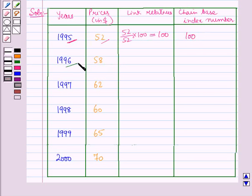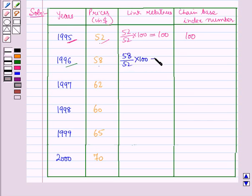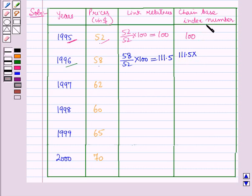For the year 1996, the link relative will be equal to the current year price, that is 58, over the previous year's price, that is 52, into 100, which is equal to 111.5. The chain base index number will be equal to the link relative of the current year, that is 111.5, into the chain base index of the previous year, that is 100, all upon 100, so this is equal to 111.5.